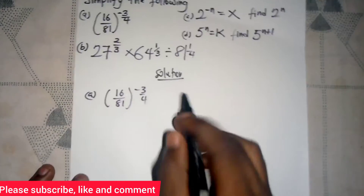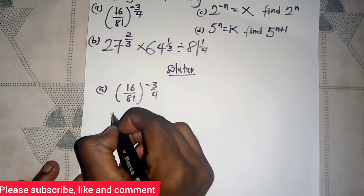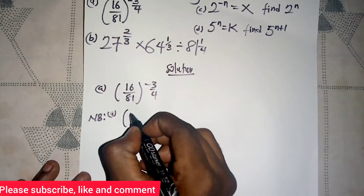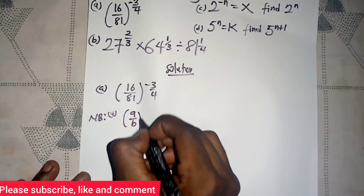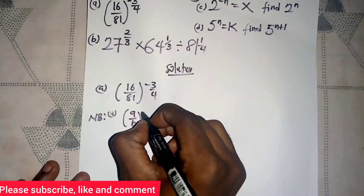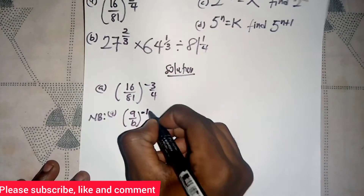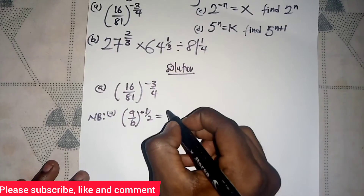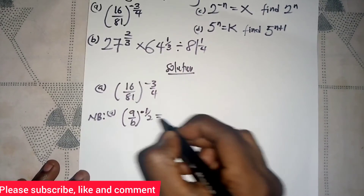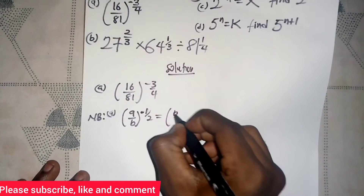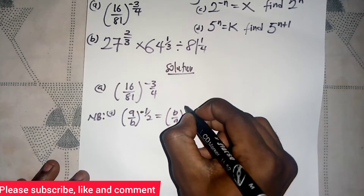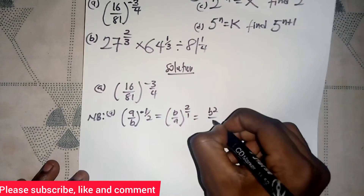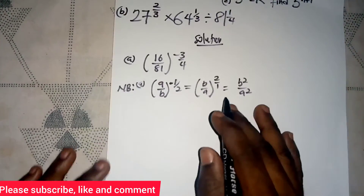Before we look at this question, note one property of indices: if you have a divided by b to a negative exponent, in order to get rid of the negative exponent you interchange the numerator and the denominator, giving b over a to the positive exponent.